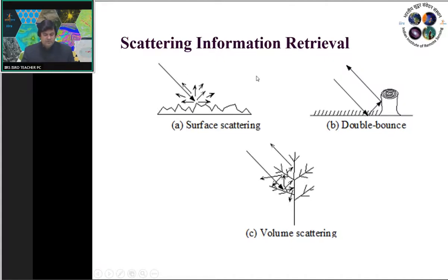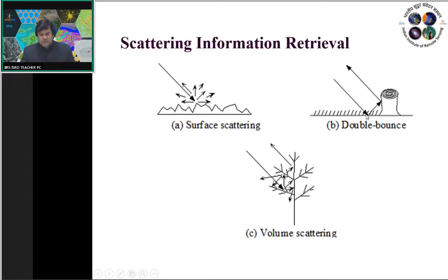The three main scattering mechanisms are: surface scattering from perfectly smooth or nearly smooth surfaces; double bounce scattering from two bounces — first from a smooth surface, then from a vertical structure such as a tree stem and ground interaction; and volume scattering from small branches, large branches, twigs, and leaves of trees.